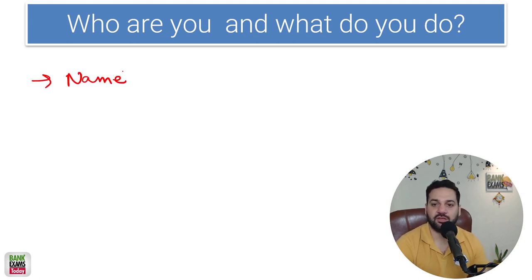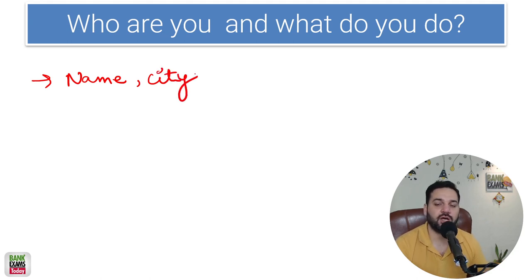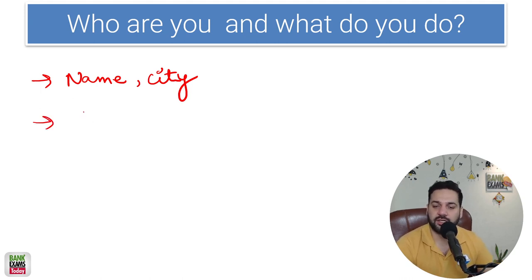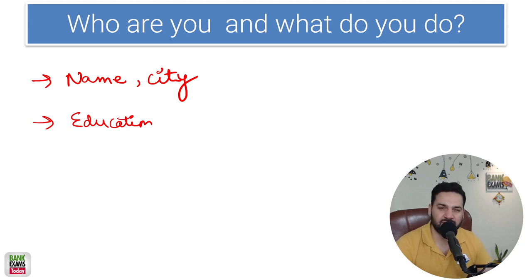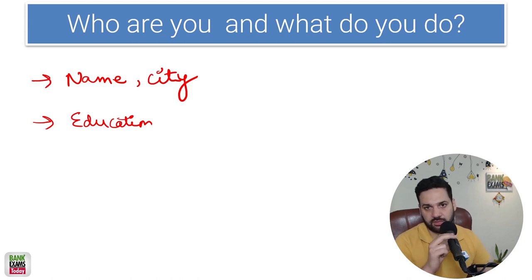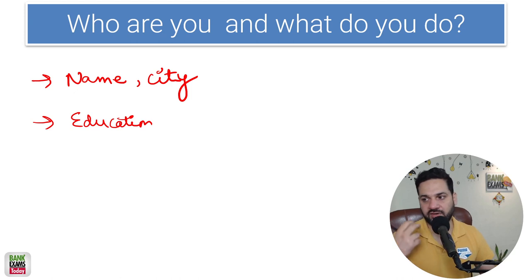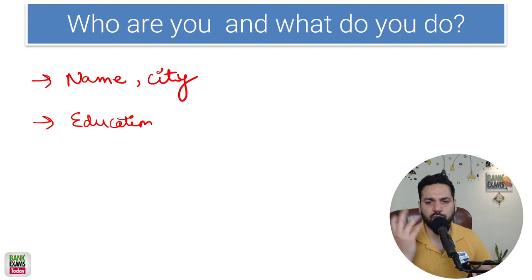For example, my name is Ramandeep Singh. Then mention where you are from — Ludhiana, Lucknow, Kanpur, whichever city. Chronology is very important here: your name, then your city. Then your education. If your parents' job profile is interesting, you can talk about it — you can simply say my father is a farmer or my father is a banker. It's optional — up to you.